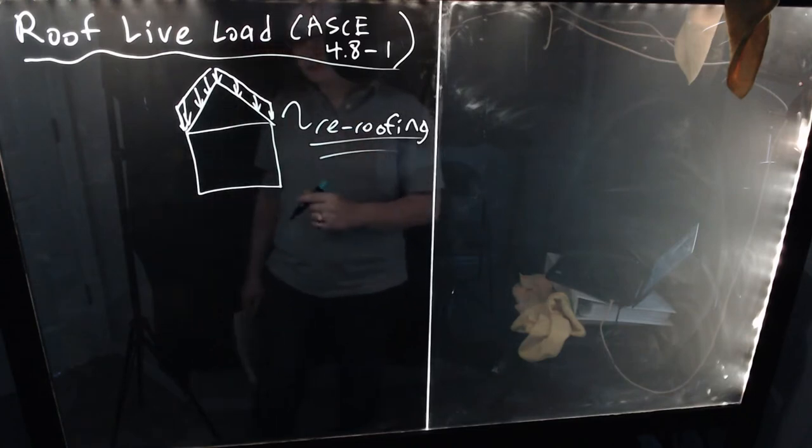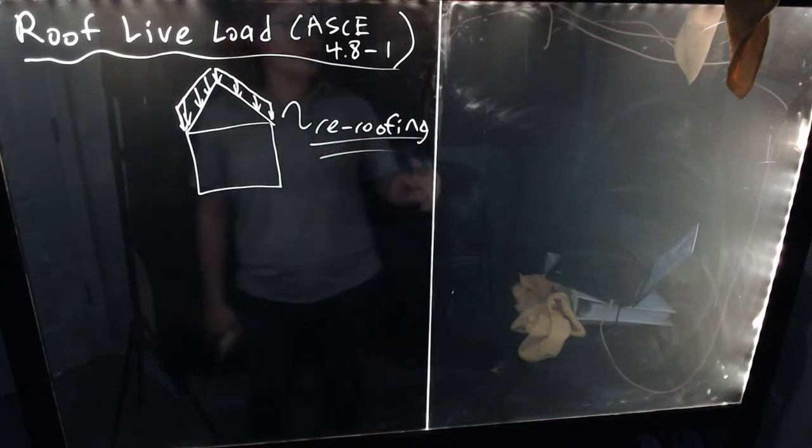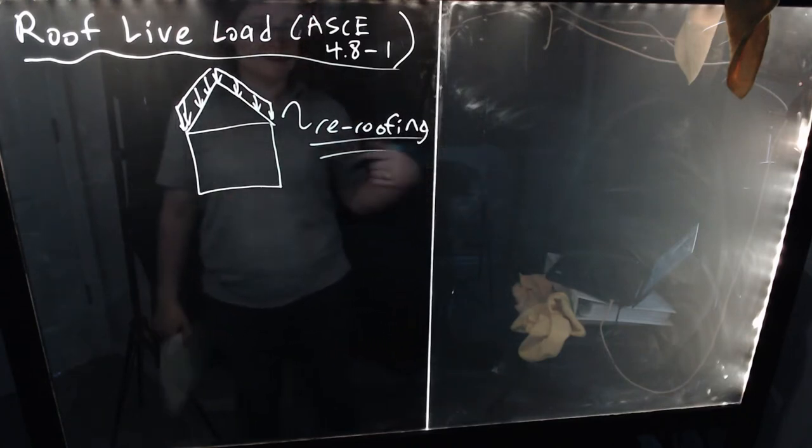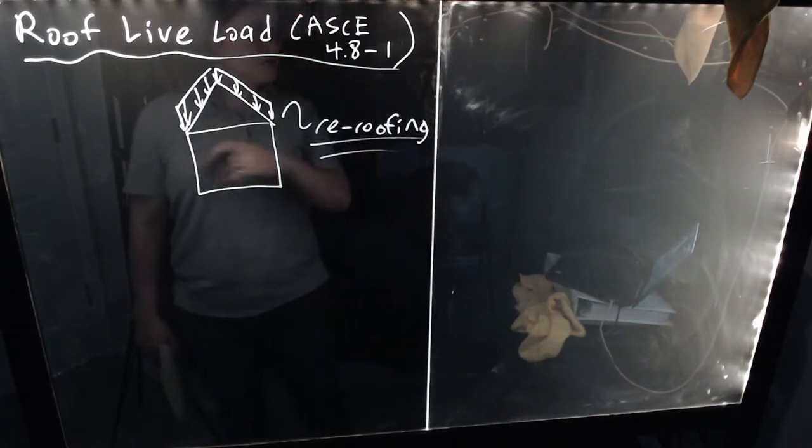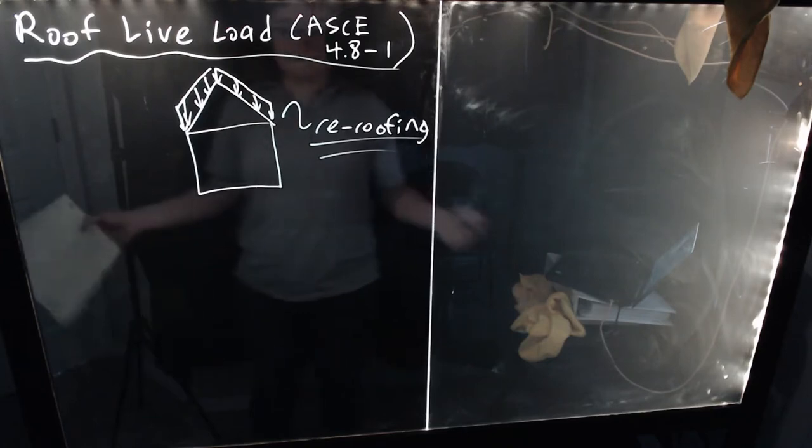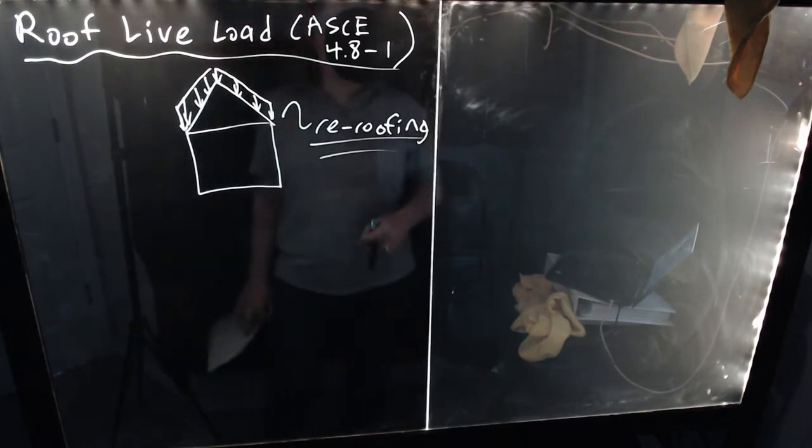And in that replacement process is ultimately where these roof live loads originate from. So you have the weight of people, you have the weight of all their equipment, you have the weight of ladders, you have the weight of climbing equipment on very steep roofs. And also, I don't know if you've ever had to lift big stacks of asphalt shingles before, but those can actually get quite heavy.